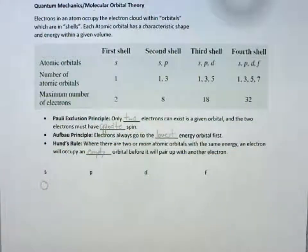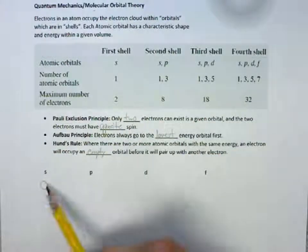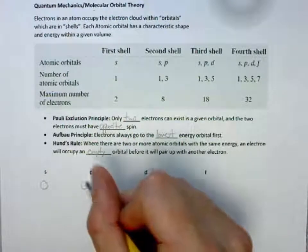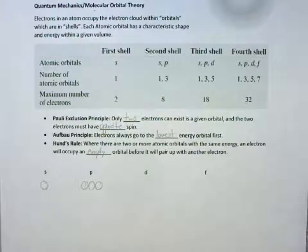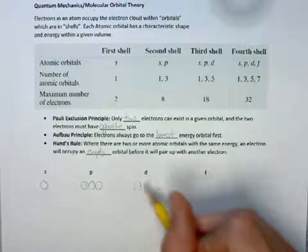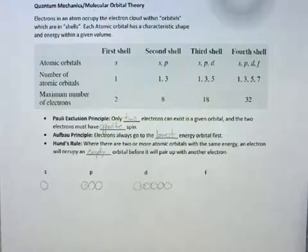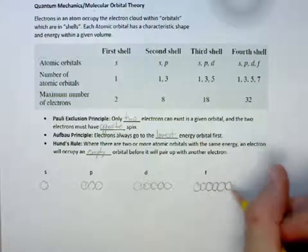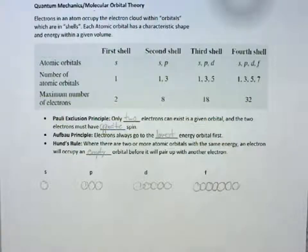For the S orbital, we have one, so we have two electrons we can fill. For P, we have three orbitals. For D, there is five. And for F, there is seven.